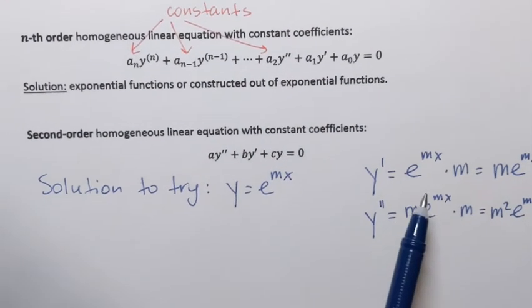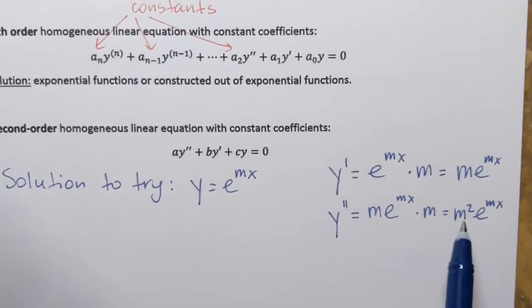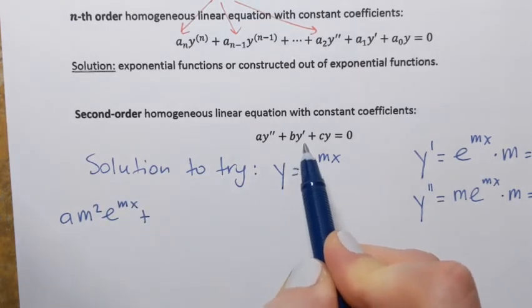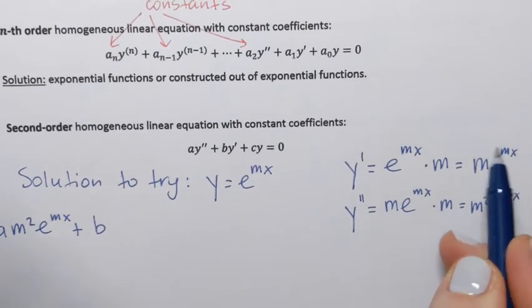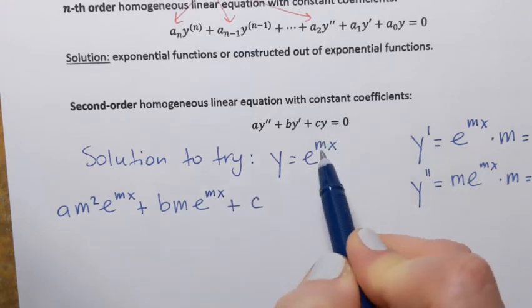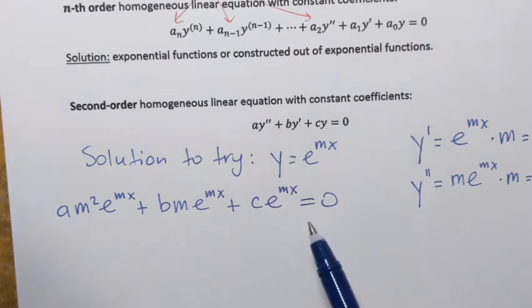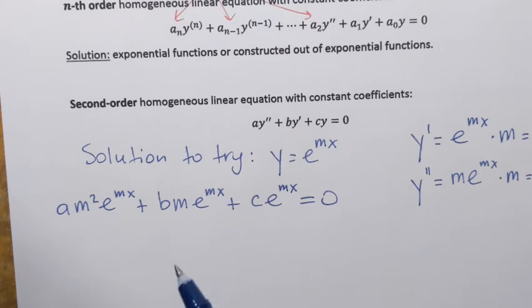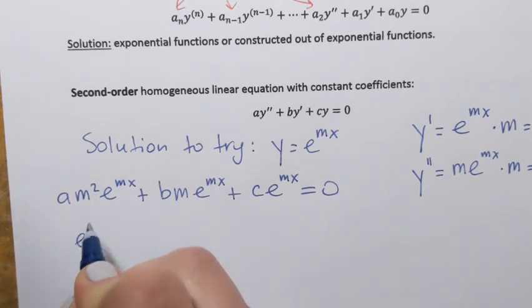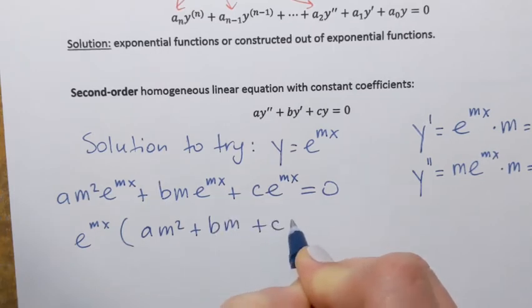Let's plug everything into the equation. We have a times y double prime, which is a times m squared e to the power mx, plus b times y prime, which is bm e to the power mx, plus c times y, which is c times e to the power mx, all equal to zero. All terms on the left-hand side have a common factor of e to the power mx, so we can factor it out, giving us: e to the power mx times the quantity a m squared plus bm plus c equals zero.